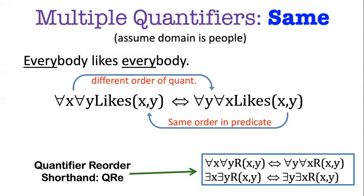Hi folks, in this video we look at multiple quantifiers and how they interact. The easiest case is when all the quantifiers are of the same type. For example, when I say everybody likes everybody, I just need two universal quantifiers to formalize that.